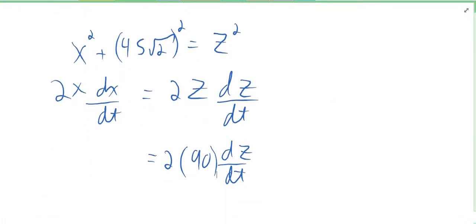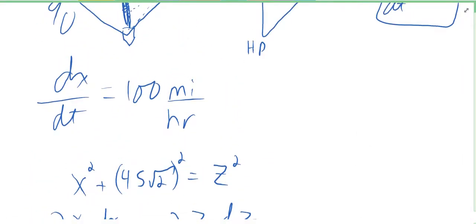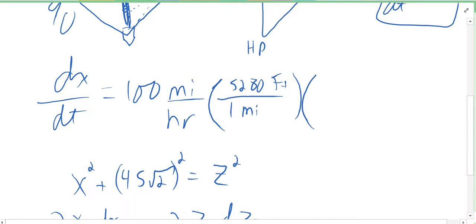x is 45 root 2, but unfortunately dx/dt is a pain in the butt and we got to switch it to feet. 100 miles an hour is going to be a whole lot of feet per hour, so I'm going to switch it to feet per second to make it a smaller number. We're going to multiply this by - to switch from miles - we know that one mile is 5280 feet. You are supposed to know that standard unit. One mile is 5280 feet. Right now it's feet per hour, but I want to switch it to feet per second, so I'm going to multiply by the fact that one hour is 3600 seconds.